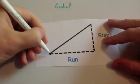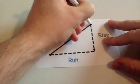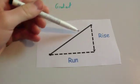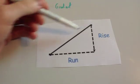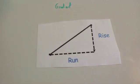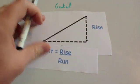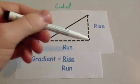You should remember that if you had two coordinates, this coordinate here and this coordinate here, if you wanted to calculate the gradient of a line that passes through both of them, you would do rise divided by run. So you work out the rise and you divide it by the run.